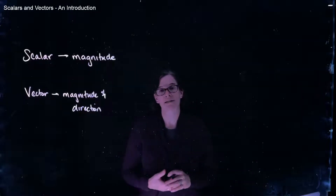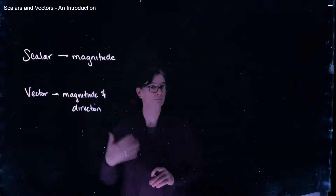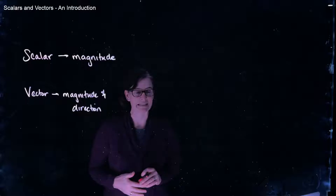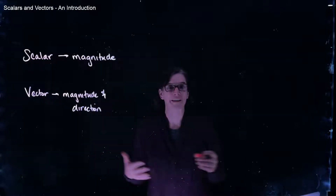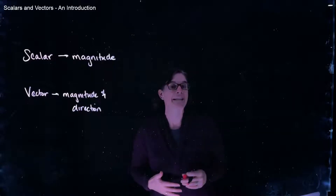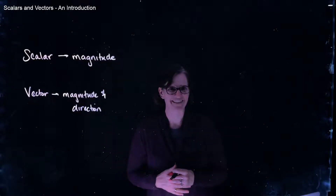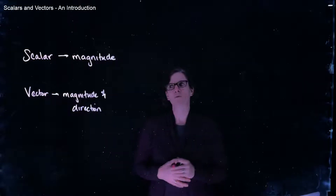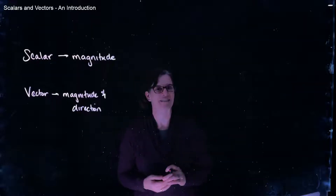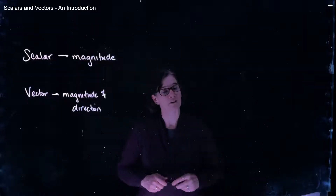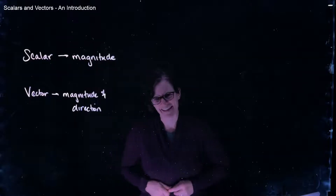What we're used to in our traditional study of mathematics is scalar quantities. When we do algebra on scalar quantities, it's the type of math we've learned throughout our long history of studying math - we add numbers together and do algebraic manipulations in that traditional sense. But if we're going to do mathematics with vector quantities, we have to pay different attention to different things, because vector mathematics is different than scalar mathematics.